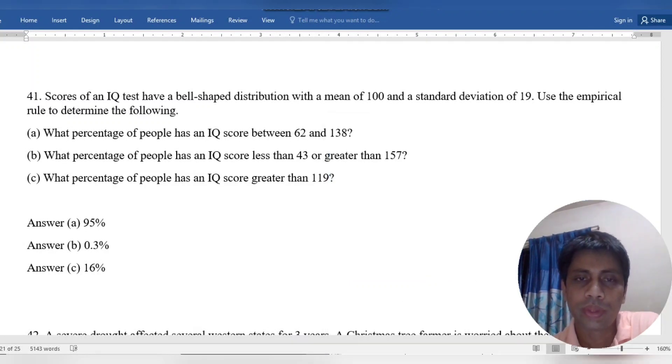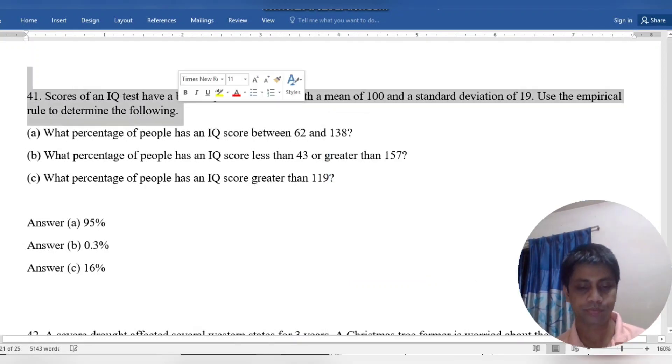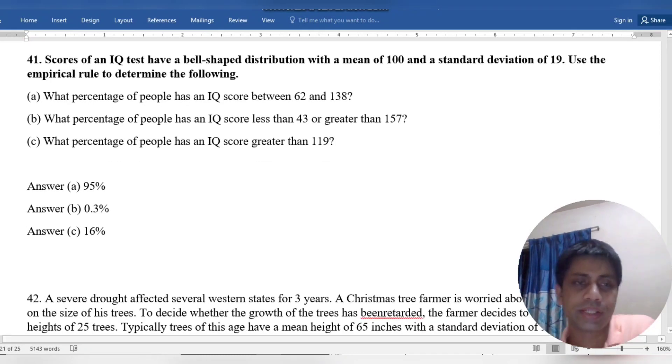Looking at the standard deviation with mean 100 and standard deviation 19, we use the IQ score between 62 and 138.